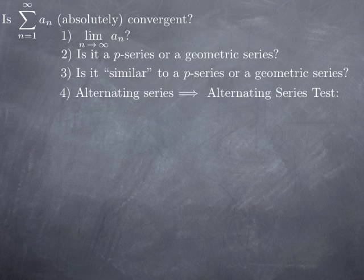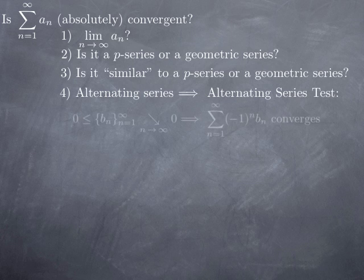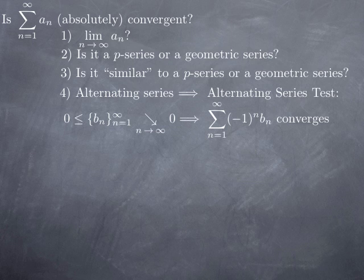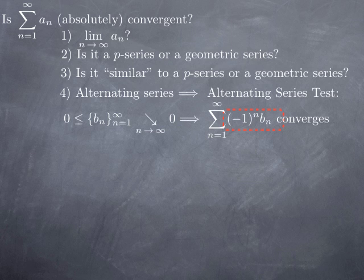If you have an alternating series — a series where the general term takes values that are alternatively positive and negative — then there is a test specific to this kind of series: the alternating series test. It tells you that if you have a sequence of non-negative numbers b_n that is eventually decreasing with limit zero, then the corresponding alternating series (−1)^n · b_n is convergent. The (−1)^n factor could also be (−1)^(n−1) or (−1)^(n+1) — any variant that makes it alternating.